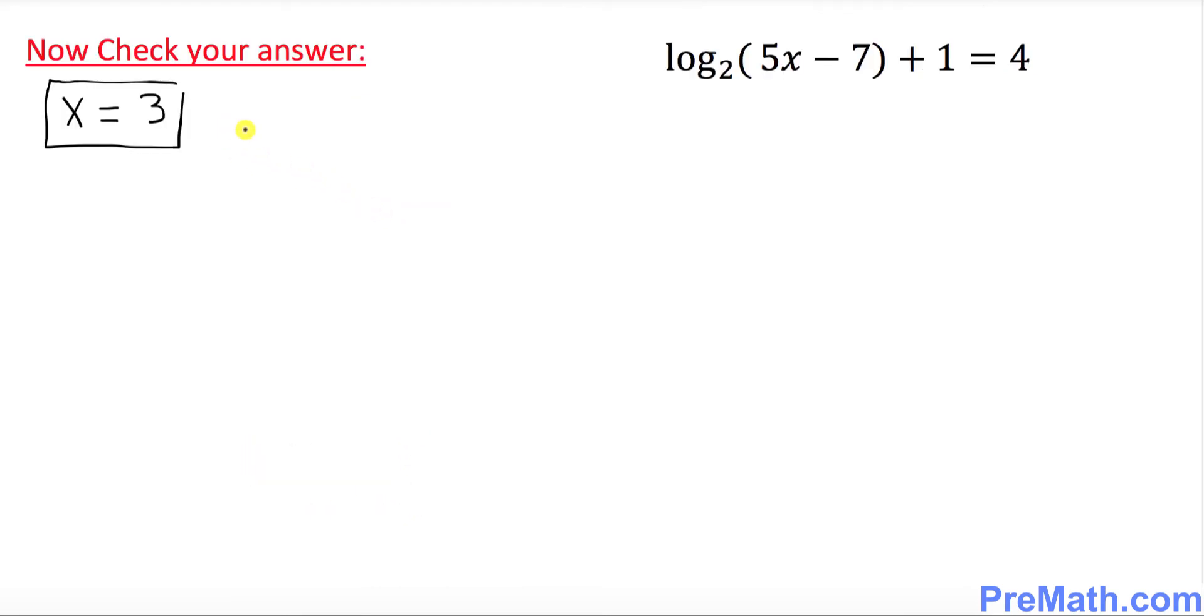And now finally we want to check our answer for any extraneous solution. So let's plug it in. Wherever you see x in our original equation replace it by 3. So this is what happens. Log of base 2, 5 times x is 3 minus 7 plus 1 equals to 4.